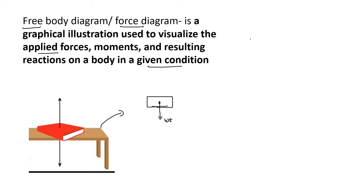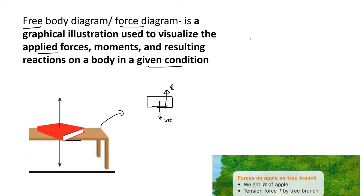Since the book was kept on a table, the table applies a normal reaction on this body. Since they are in the same magnitude and opposite directions, they cancel, and that's why it is in the resting position. Let's take some more examples from everyday life.